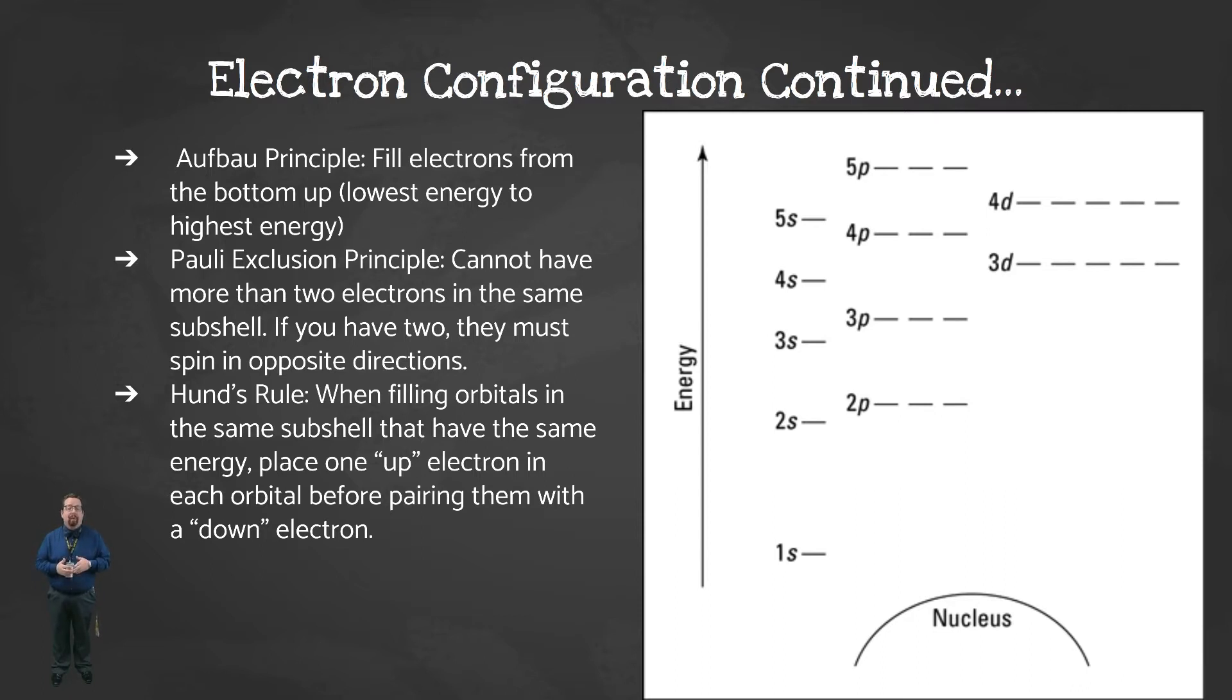So, how do we fill this out? Well, there are three rules we have to follow. The most important one is the Aufbau principle, which tells you that you have to start with the lowest energy orbital, and then work your way up. In other words, no matter what element you're writing the electron configuration for, the first electron you place will always be a 1s electron.